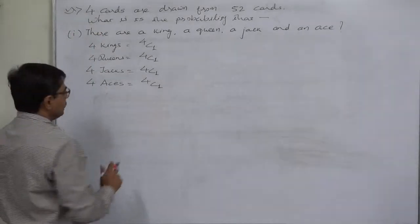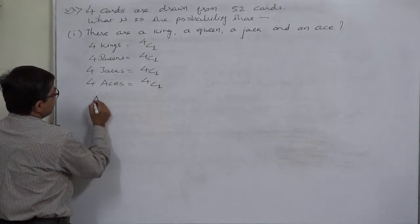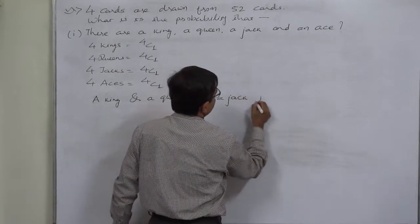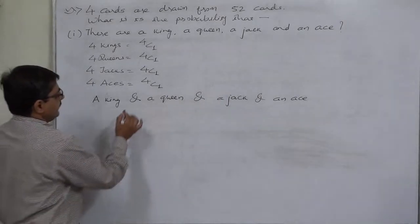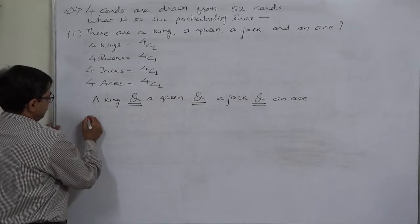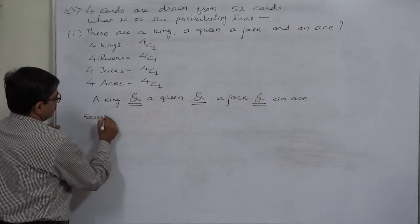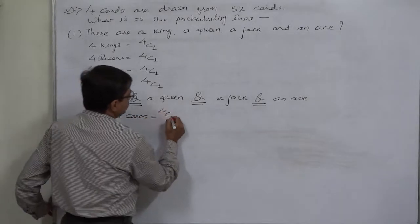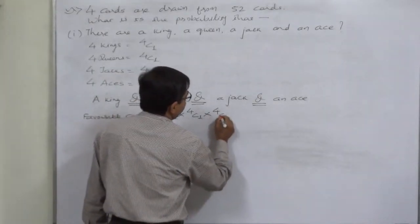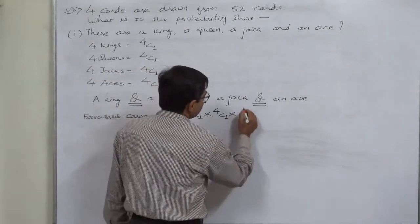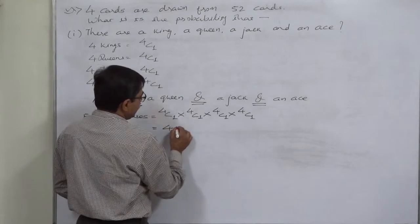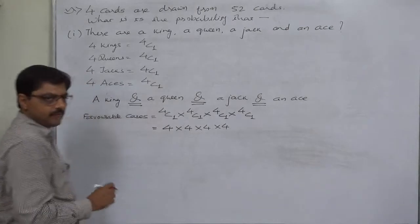Since we are drawing four cards simultaneously, the case is: a king AND a queen AND a jack AND an ace. We know that in probability, 'and' suggests multiplication. So the favorable cases are 4C1 (for king) multiplied by 4C1 (for queen) multiplied by 4C1 (for jack) multiplied by 4C1 (for ace). Since nC1 is always n, 4C1 is 4, so it is 4 × 4 × 4 × 4 = 4 raised to 4.